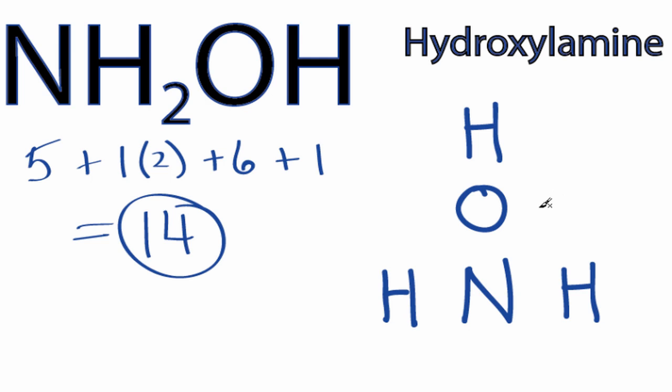We have fourteen valence electrons. We'll put two between atoms to form chemical bonds. So we've used a total of eight. Hydrogens only need two valence electrons to have a full outer shell, so they're okay. So we have eight, ten, twelve, and then we'll go back to the central atom, fourteen.